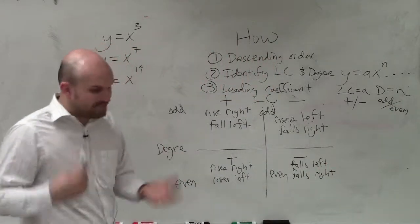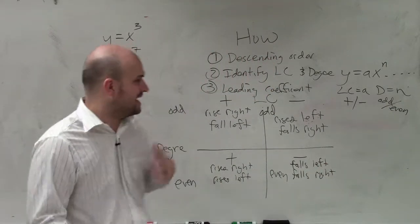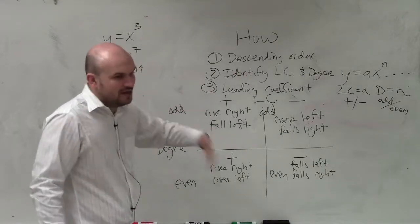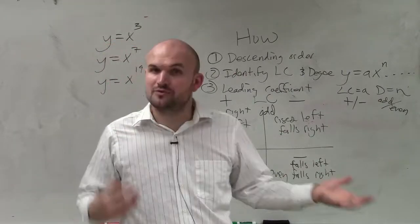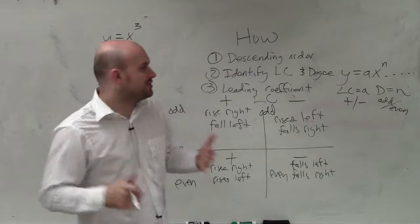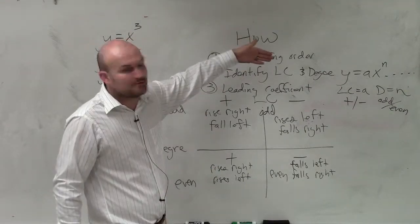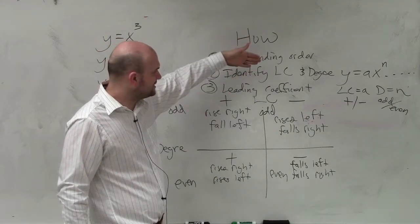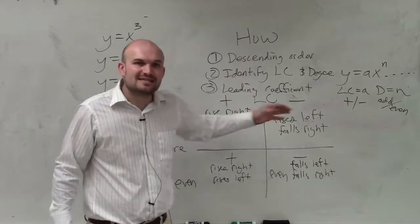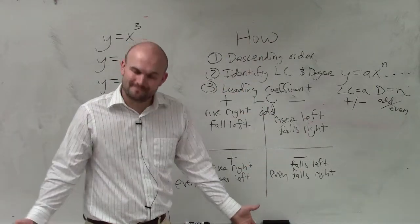So there you go, ladies and gentlemen. That's your basic leading coefficient test. Obviously, there's another formal thing which you're probably going to need to know, which I go through in some videos. But basically, when determining your end behavior, you just need to make sure you have it written in descending order, identify your leading coefficient and degree, and then use the test to identify your end behavior. There you go.